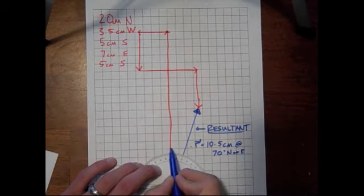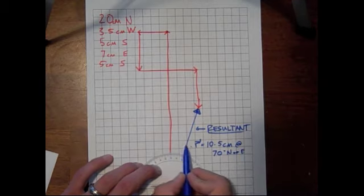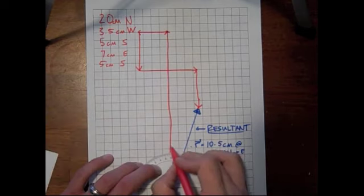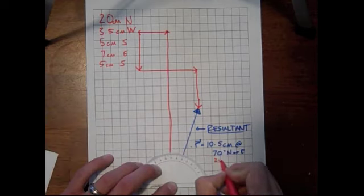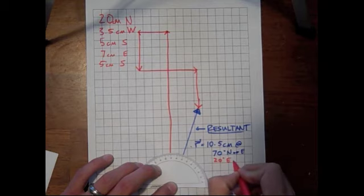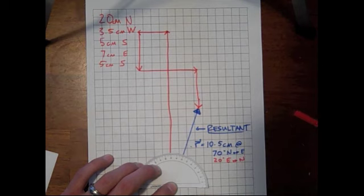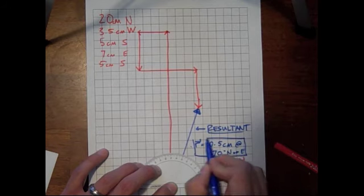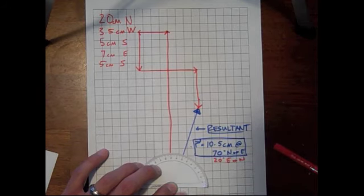If you wanted to, you could also start off from north and move to the east. That's just going to be a different angle. So if we start off to the north, you moved 20 degrees east of north. Either one of those that you report is fine, but when we talk about our resultant vector, it needs to have both the magnitude and the direction included along with it.